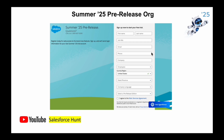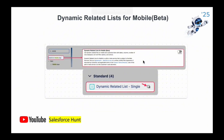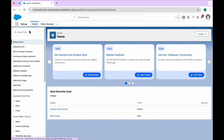The next feature is Dynamic Related List for Mobile — it's still in beta. Previously it was not available directly, but now you can leverage this feature and enable it based on your mobile devices. Let's see this in action. I've just logged into my org.